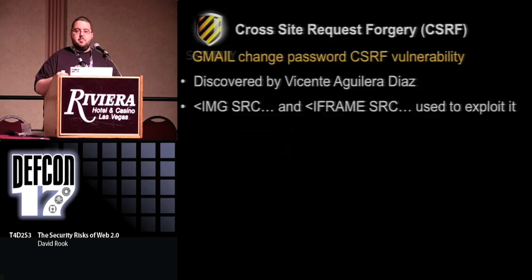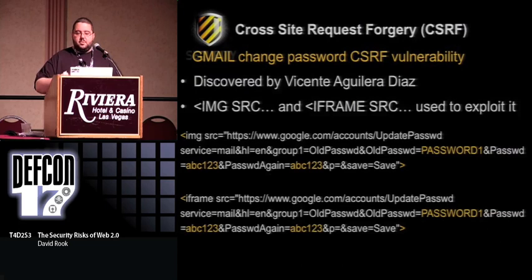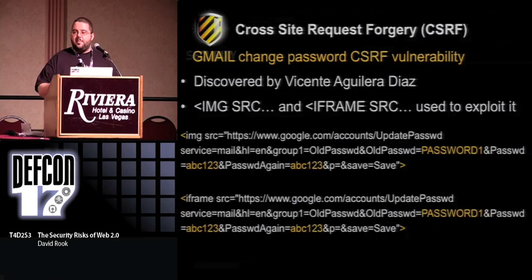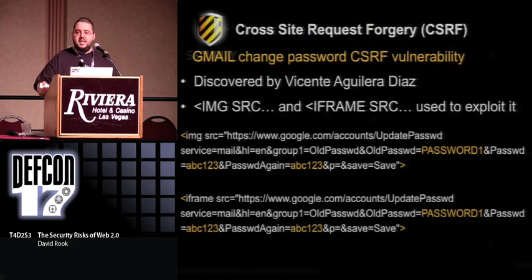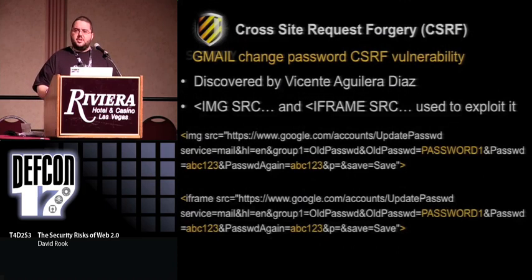A simple real-world example of a cross-site request forgery attack against Gmail: it essentially brute-forced a password reset against your account, using the image source and iframe source tags. The researcher found he could make requests directly to reset the password with Google — providing an old password and the password he wants to reset your account to. Normally when you do a password reset with Gmail, you have to enter a CAPTCHA, but by making this request directly he could bypass the CAPTCHA system and brute-force those values. It took around 18 months from first reporting to when it actually got fixed.